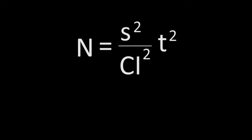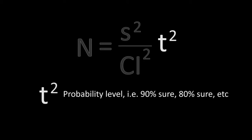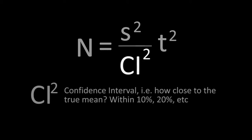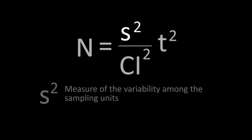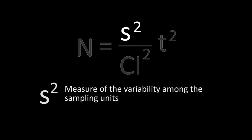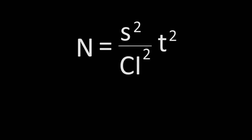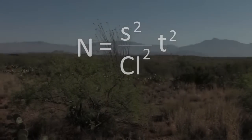The formula we use to estimate how many sampling units are required has three components. In the numerator is the T value — T squared — which tells us the probability level: we'd like to be 90 percent, 95 percent, or 80 percent sure that our calculated mean is within a certain percentage of the true mean. The denominator is the measure of how close to the true mean we want to be — for example, within plus or minus 10 percent. The other numerator term is S squared, which measures the amount of variability among sampling units. So: how sure do we want to be, how close do we want to be, and how much overall variability are we dealing with?